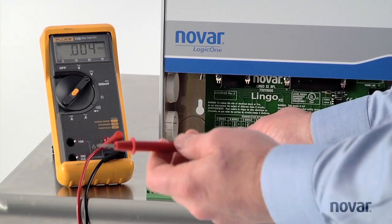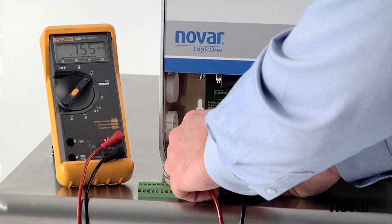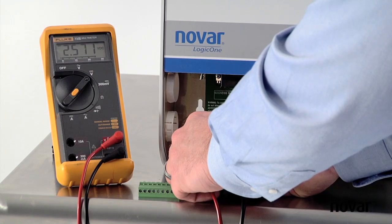And my red lead on either the positive or the negative, you choose. And I'm going to check that for a proper 2 to 3 volts DC. And you can see this one here is producing 2.5 volts DC from positive to shield.